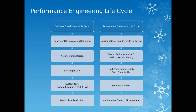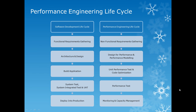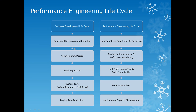Let's start by looking at the performance engineering lifecycle. On the left hand side is the software development lifecycle based on the waterfall development model, which addresses stages of functional requirements gathering, architecture and design, application build, system test, system integrated test, user acceptance, and then deploy to production. From a performance engineering standpoint, at the functional requirements gathering stage, you focus on non-functional requirements gathering — determining the non-functional requirements for the application, basically focused around performance and scalability.